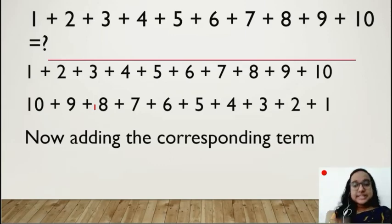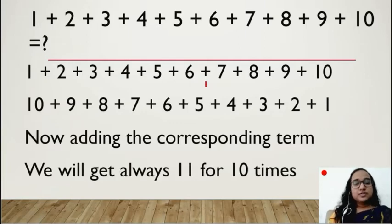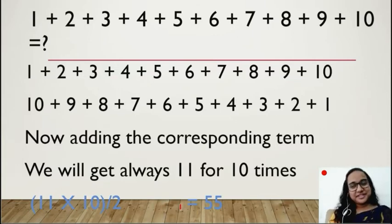Now the question is, how many times do we have this? We have 10 terms. So we will multiply 11 by 10 times. What will we get in the answer? Sum of these two series. When we add 1 to 10 twice, we will get 2 times. But we need only one time. So that's why I will divide it by 2. Here you can see, 11 times 10 divided by 2 and the answer is 55.